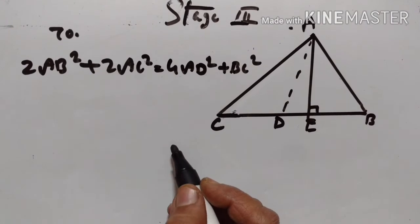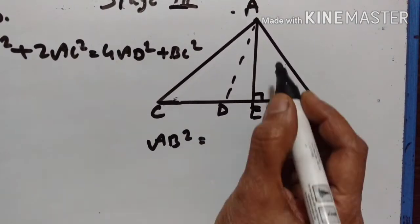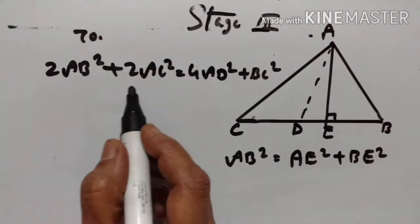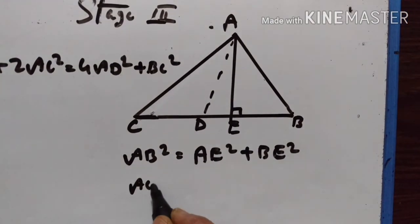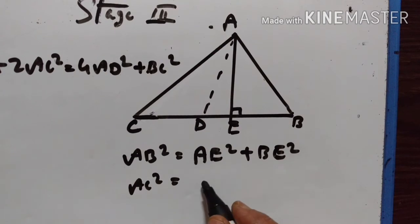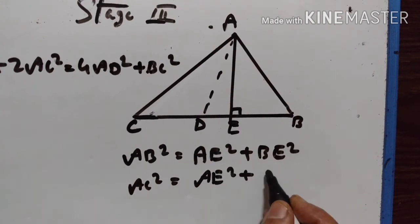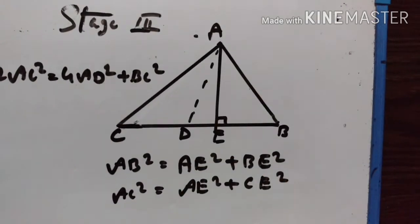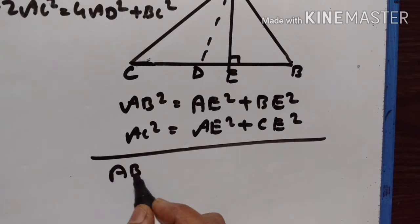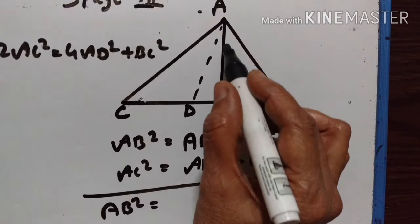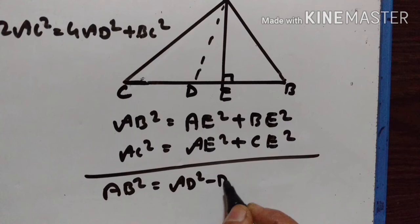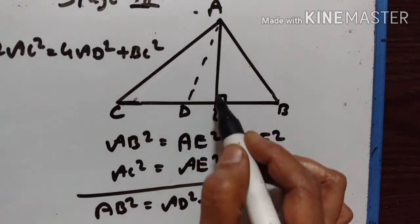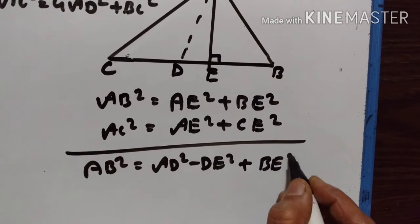What is AB squared? AB squared is equal to AE squared plus BE squared. What is AC squared? AC squared is equal to AE squared plus CE squared. Now, AE squared is equal to AD squared minus DE squared, since AD is the hypotenuse in triangle ADE.